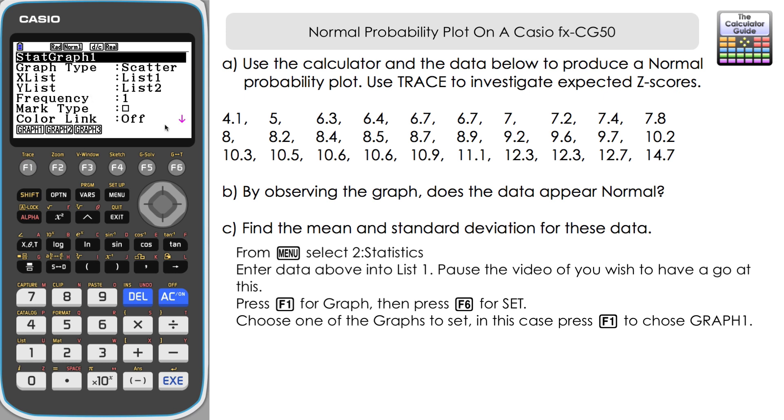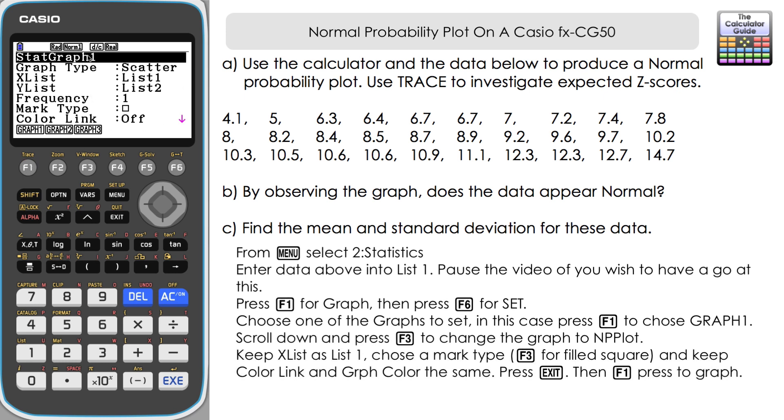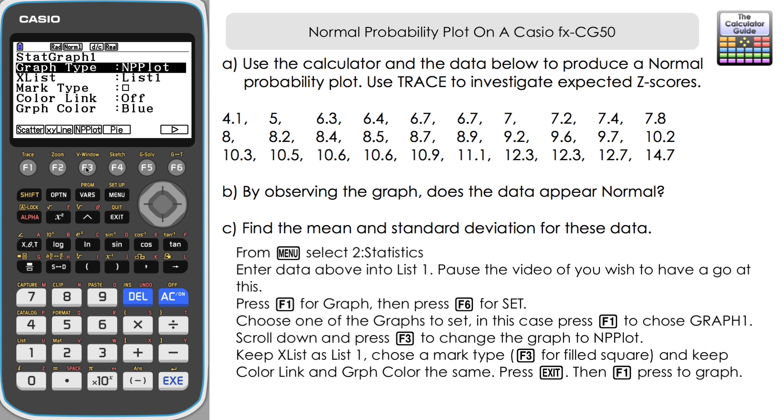We're going to just change that. Now I'm going to use graph one. It's up to you which graph slot you use. If I go down, I'm going to change scatter to NP plot, normal probability plot. So it's F3.